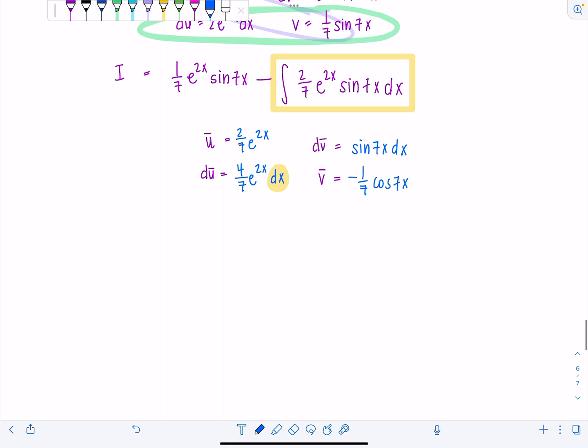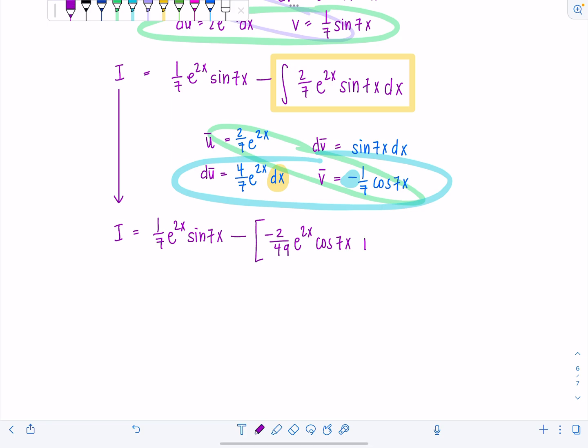So let's see what we got going on now. I'm just going to bring down this I. I equals 1/7th e to the 2x sine 7x minus, we've got another uv. So what is that? Negative 2 over 49 e to the 2x cosine 7x minus vdu. Plus integral 4 over 49 e to the 2x cosine 7x dx.